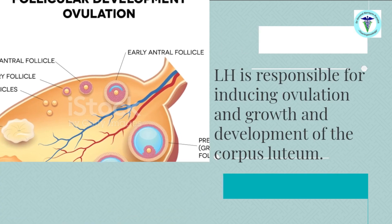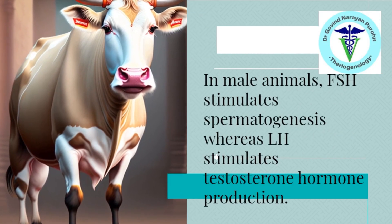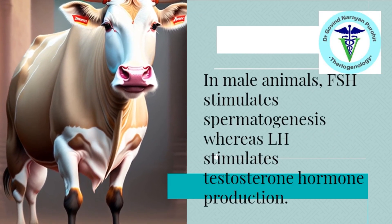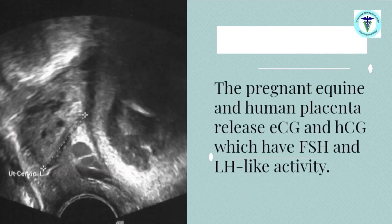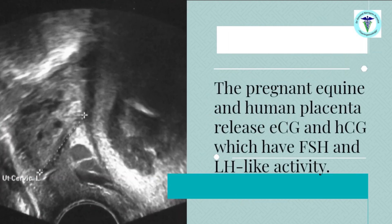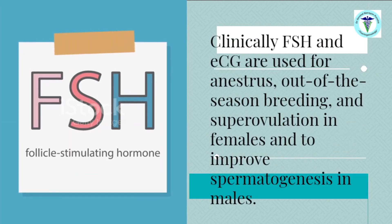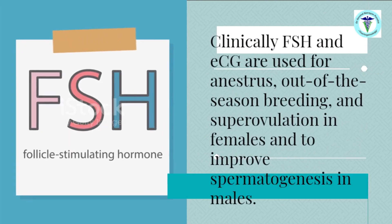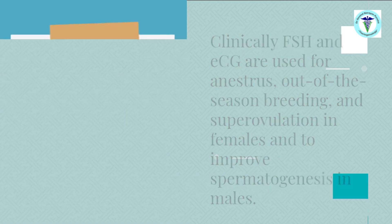In male animals, FSH stimulates spermatogenesis, whereas LH stimulates testosterone hormone production. The pregnant equine and human placenta release eCG and hCG respectively, which are two additional gonadotrophins. Clinically, FSH and eCG are used for out-of-season breeding.